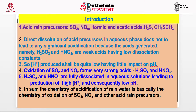Acid rain precursors are sulphur dioxide, NOx (NO and NO2), formic and acetic acid, and H2S and CH3SH. Of these, H2S is first oxidized to SO2 and then to sulphuric acid. The photochemical oxidation of these compounds is important, though not much of their chemistry has been studied.